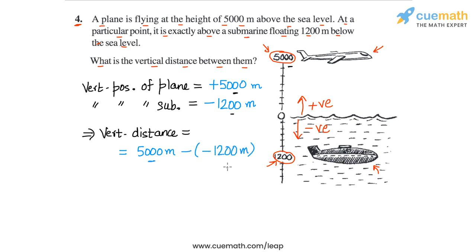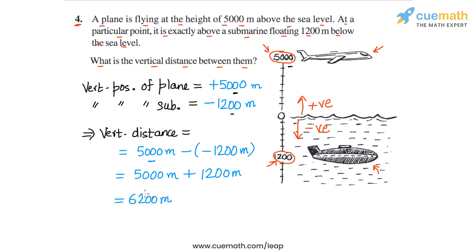So we have 5000 − (−1200) meters, which equals 5000 + 1200 meters = 6200 meters. As discussed earlier, the vertical distance between the plane and the submarine is 6200 meters.